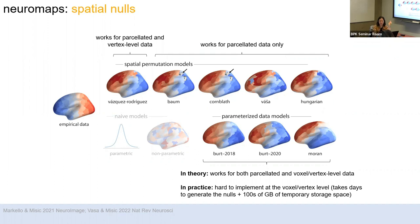The generative models just need an idea of the spatial correlation of your data, so you do need to provide your map. It doesn't matter the modality, but it does make a difference how smooth your data is. For example, PET data is generally much smoother than noisier data. If it's very smooth and you do the spins, your p-values will generally be higher because you'll get a lot of erroneous correlation coefficients. If you have data that's not very smooth, your p-values are going to be lower.